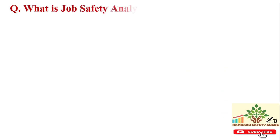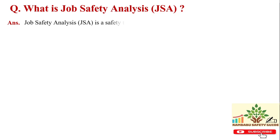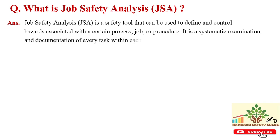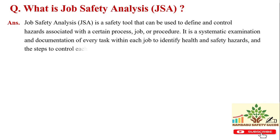First of all, we should know about JSA — job safety analysis. Job safety analysis is a safety tool that can be used to define and control hazards associated with a certain process, job, or procedure. It is a systematic examination and documentation of every task within each job to identify health and safety hazards.